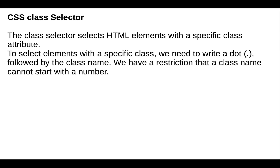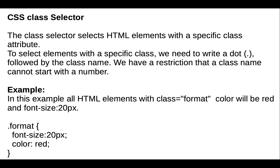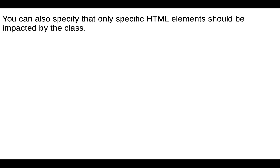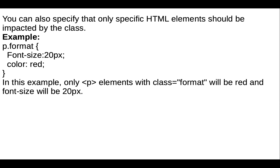Next is the CSS class selector. The CSS class selector selects HTML elements with a specific class attribute. To select an element with a specific class, we write a dot followed by the class name. Note that a class name should not start with a number. For example, all HTML elements with class 'format' will have color red and font size 20px. You can also specify that only a specific HTML element should be impacted by the class, such as p.format.